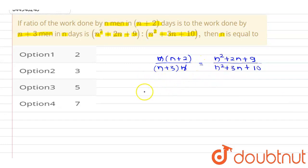Now cross multiply. This will be (n+2)(n²+3n+10), and this equals (n+3)(n²+2n+9). This is what we get. Now we need to solve this bracket.